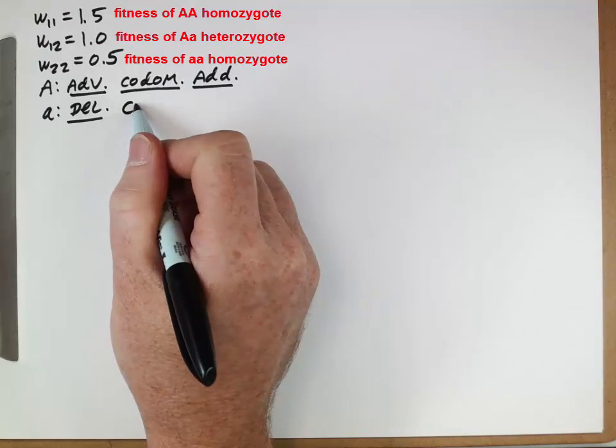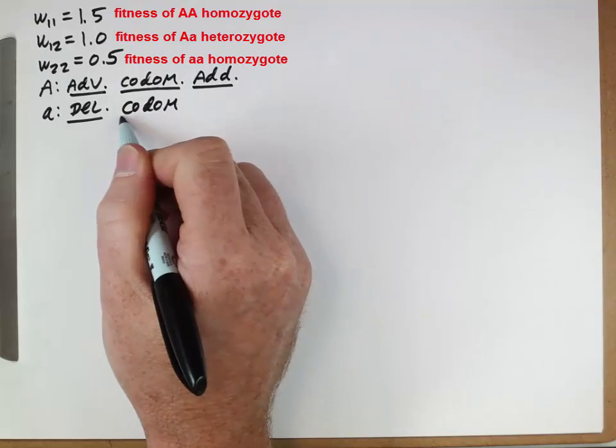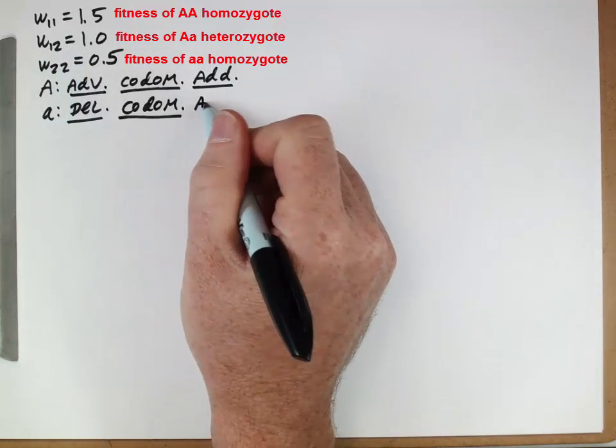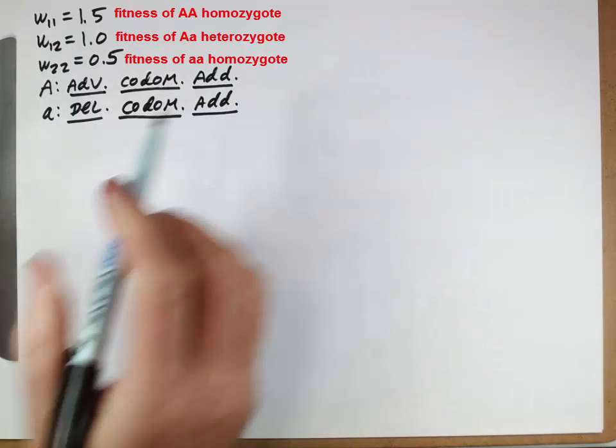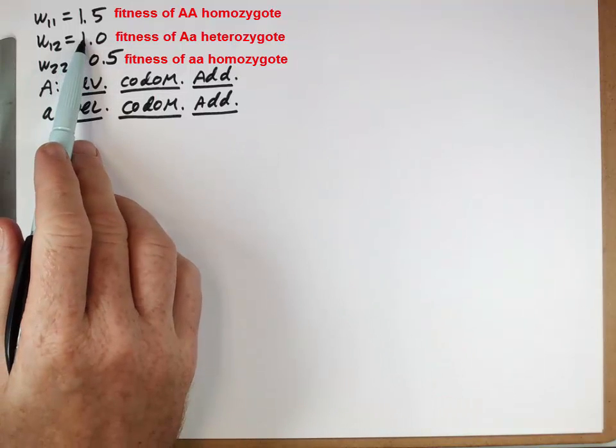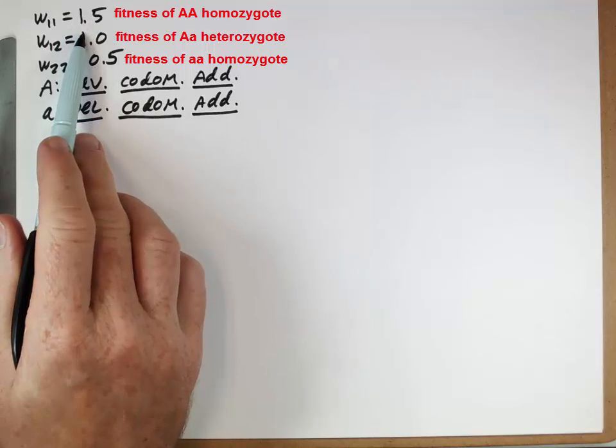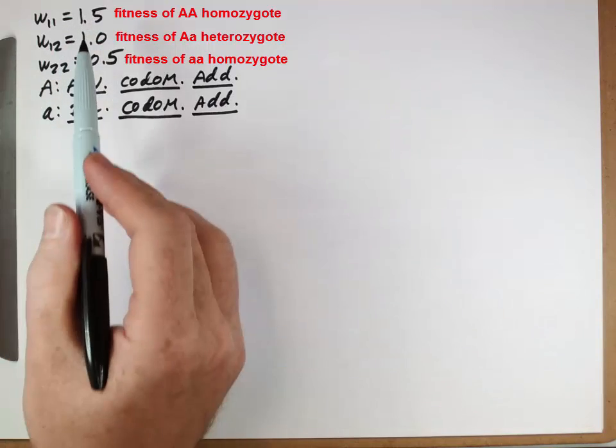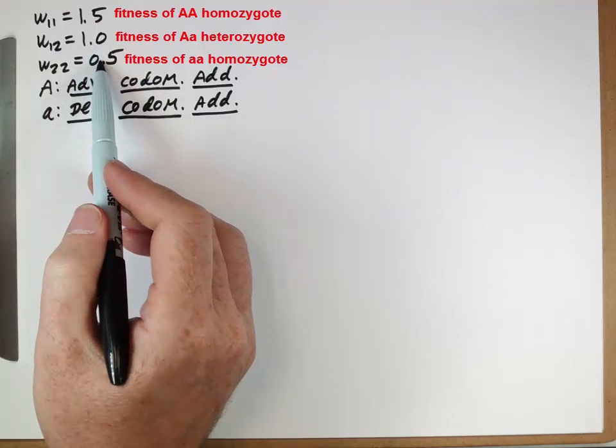It's also codominant because having one copy does reduce your fitness somewhat. Or also we term this additive. If the lowercase a allele was recessive, then this fitness would be the same as this. If the lowercase a allele was dominant, then this fitness would be the same as this.